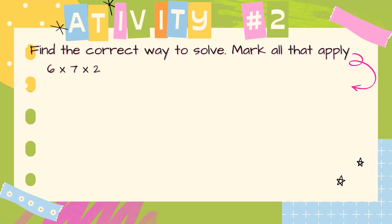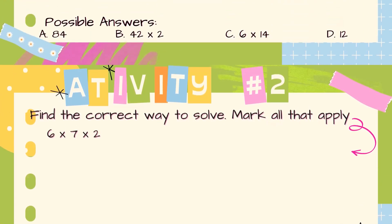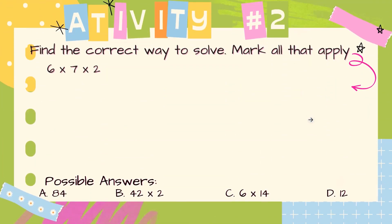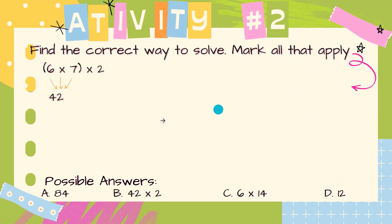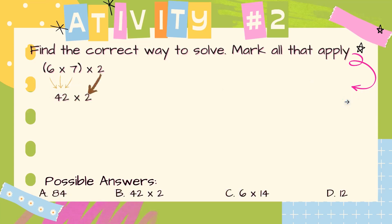This is a tricky activity, so we have to go deeper and think smarter. First step: use parentheses to show the grouping you're going to use. We're now ready to multiply. 6 times 7 equals 42, then 42 times 2. Let's look at the possible answers: we have 42 times 2 — we have found the first answer.